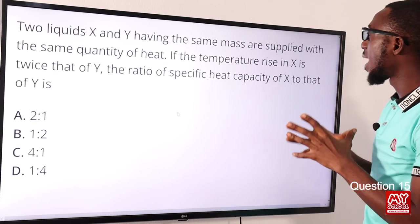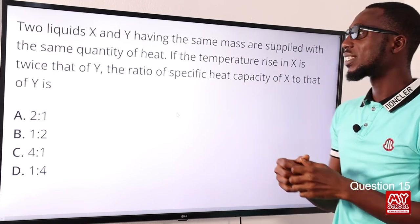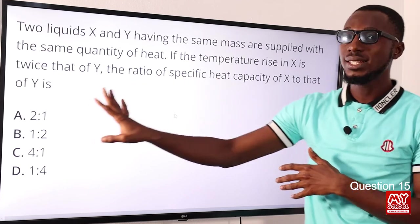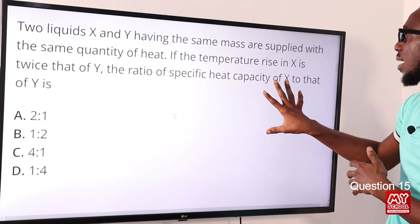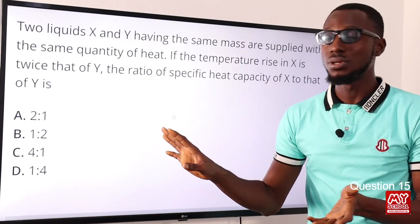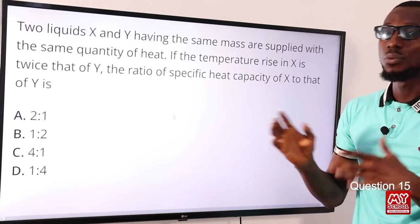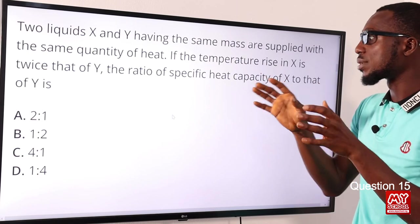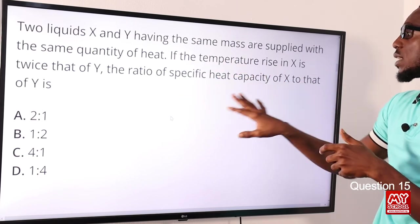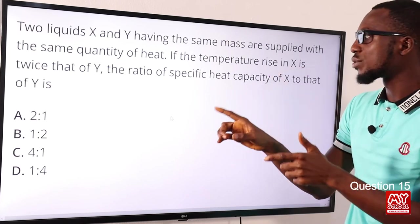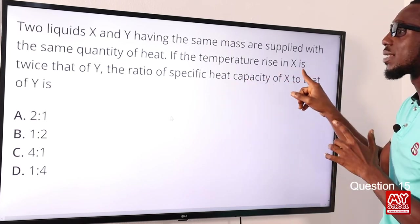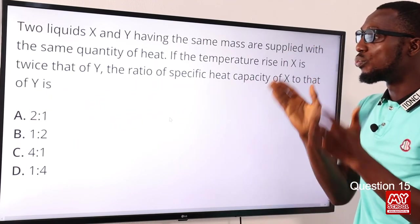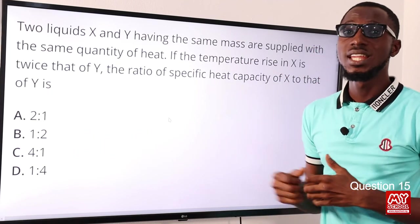Question fifteen: two liquids X and Y of the same mass are supplied with the same quantity of heat. The temperature rise in X is twice that of Y. Since Q = mcΔθ and Q and m are equal, the specific heat capacity is inversely proportional to the temperature rise. So the ratio of specific heat capacity of X to Y is 1:2. Option B is the correct answer.